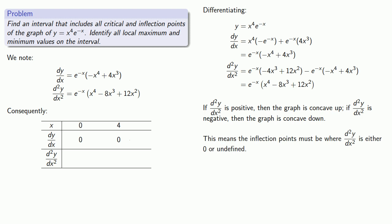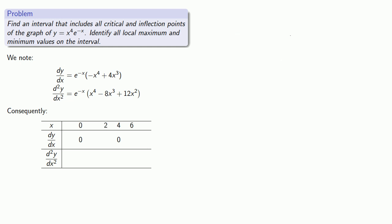And once again, e to the minus x and polynomials are defined everywhere, so our second derivative will never be undefined. So let's look for where it is equal to zero. So we've found the second derivative as a product of two things, so if we want it to be equal to zero, we need one of the factors to be zero. Either e to the minus x is zero, which is impossible, or the other factor is zero.